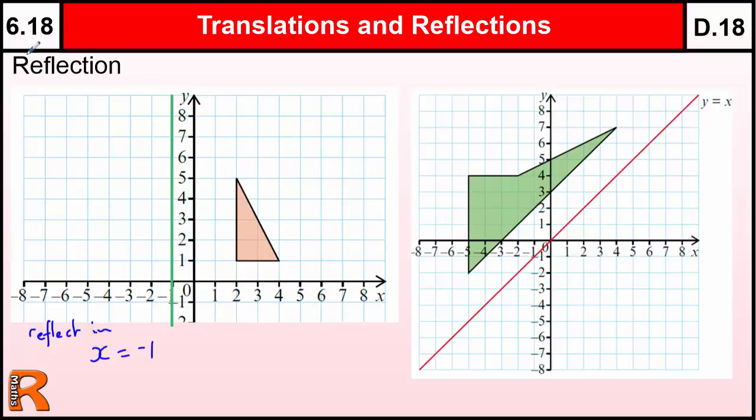Now if we had a bit of tracing paper, we could trace that on there and then just flip it over and draw it on the other side. But for this, I'm just going to count out the squares. So we've got 1, 2, 3 squares that way to the line. So we need to count 1, 2, 3 on the other side.